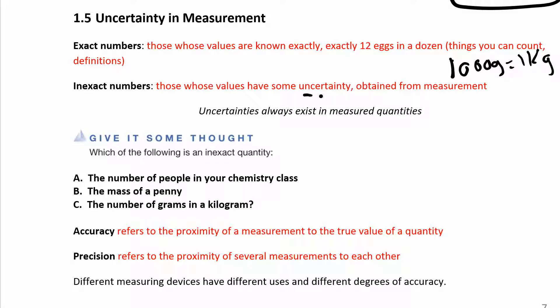Inexact numbers are things that have some amount of uncertainty in them. They usually come from measurement, so any measured quantity is going to be an inexact number. This is important when figuring out the total number of significant figures — you need to know how many of those numbers actually matter. Inexact numbers determine how well you know your final answer, while exact numbers have an infinite number of significant figures and won't limit how well you know your final answer.